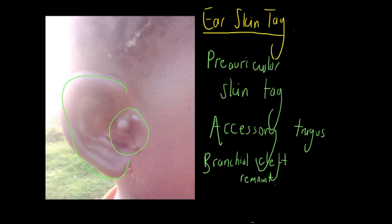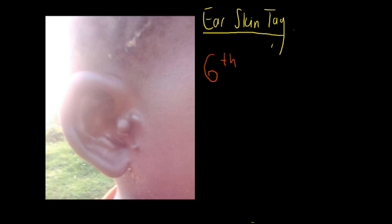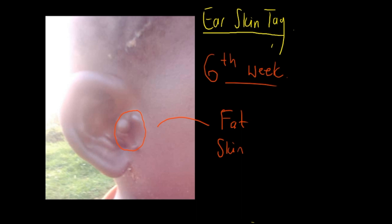This is important because it leads us on to why these are formed. Casting our minds back to embryology, in the sixth week of gestation is when the external ear is formed. The external ear is typically formed when six hillocks fuse together to form the pinna. But if they fuse incorrectly, appendages can form. This can be made up of fat, skin, or cartilage.